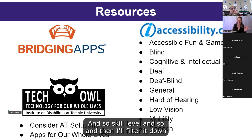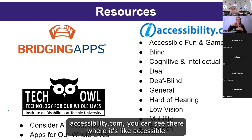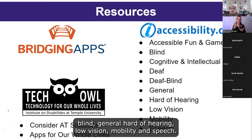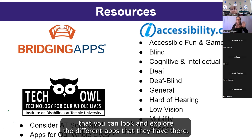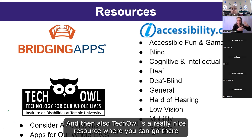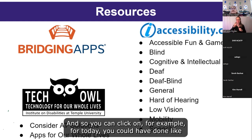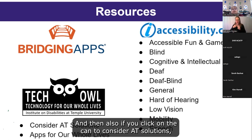You can also filter by skill level, and it'll narrow things down for you. iAccessibility.com lets you explore apps by category: accessible fun and games, blind, cognitive and intellectual, deaf, deaf-blind, general, hard of hearing, low vision, mobility, and speech. Tech Out is another nice resource where you can click on 'apps for our whole life' — it's categorical, so for today you could click on organization or cognitive to bring up useful apps.